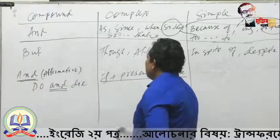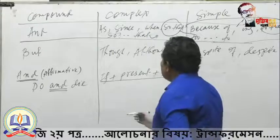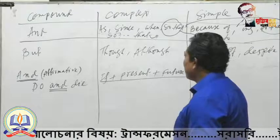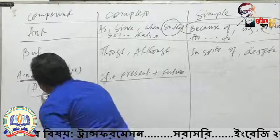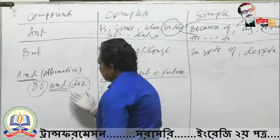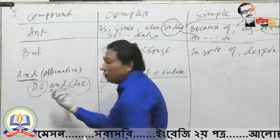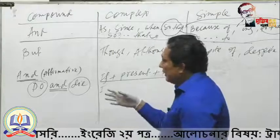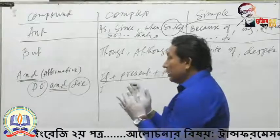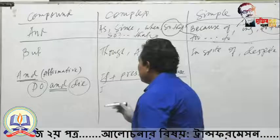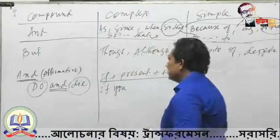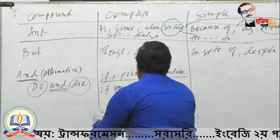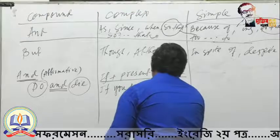This structure — if + present + future — is very common and we have learned it from an early stage. In the sentence 'do and die,' you do not get any visible subject; the subject is silent. But in imperative sentences the subject is always 'you.' So for the complex sentence: 'If you do, you will die.' You have to write the sentences in full for complex sentence.